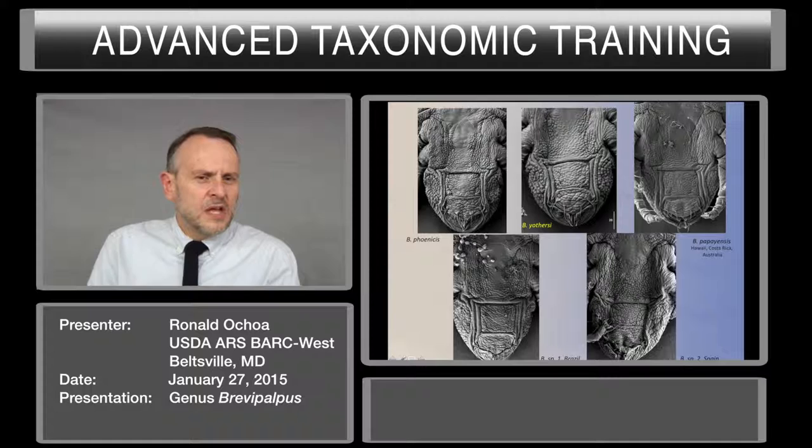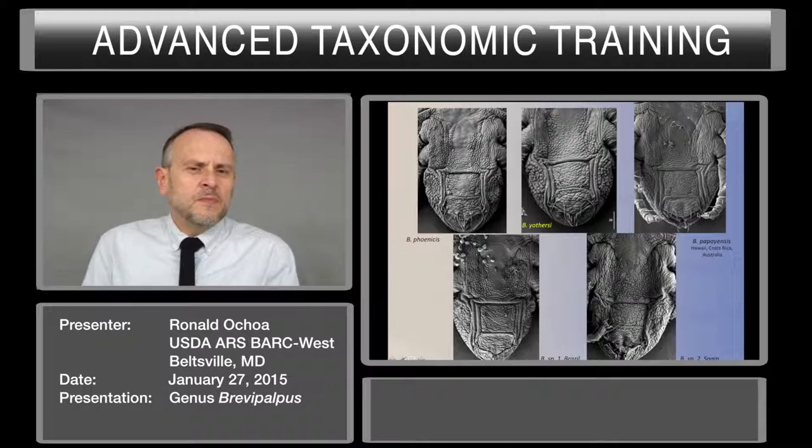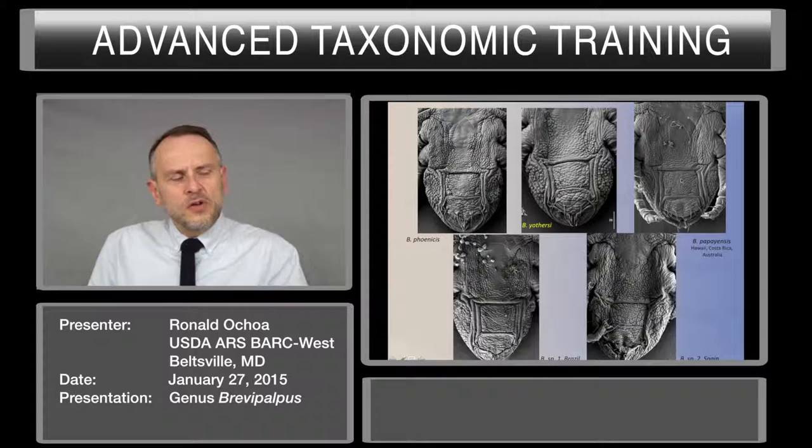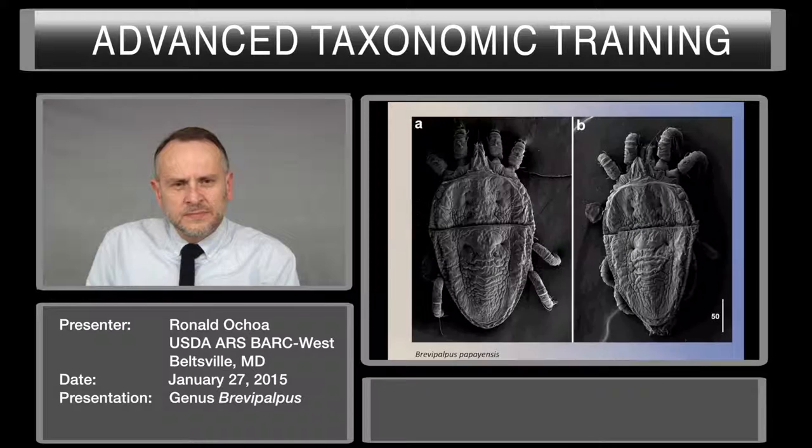Now, just look at the ventral plates and genital plates — look at this set of these five species: Brevipalpus phoenicis, Brevipalpus yoderi, and Brevipalpus papayensis. In Brevipalpus papayensis, look at the ventral plate — you can see that the ventral plate has some of the cells going longitudinal, going down, when all the other ones are going horizontal.